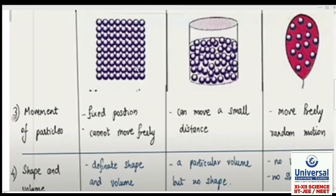Now talking about liquids, they have a particular volume but no shape. Liquids take the shape of the container in which they are kept. If you keep them in a small container, they'll take that shape. If you keep them in a large container, they'll take that shape. So they take up the shape of the container.